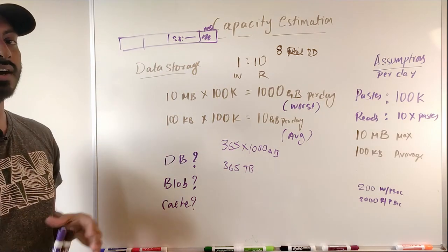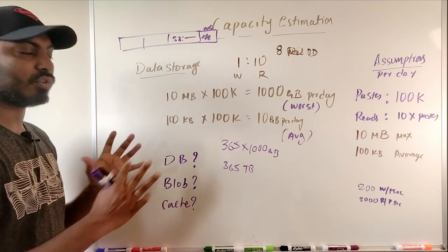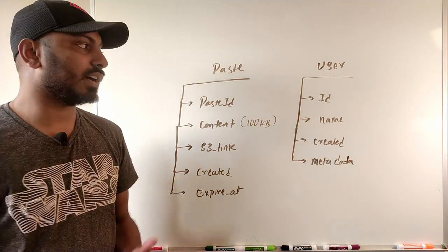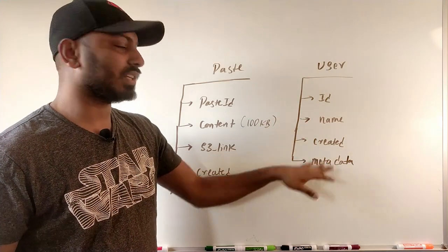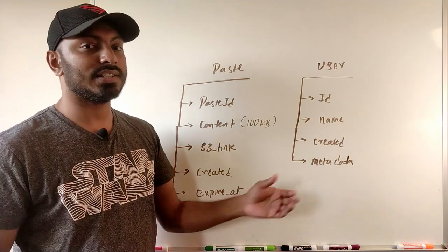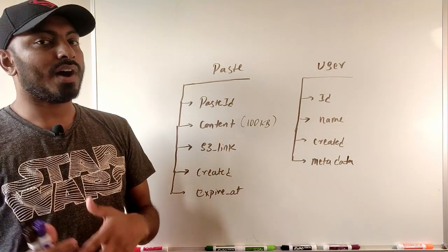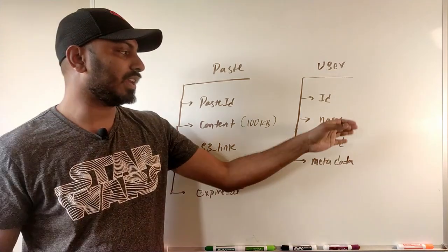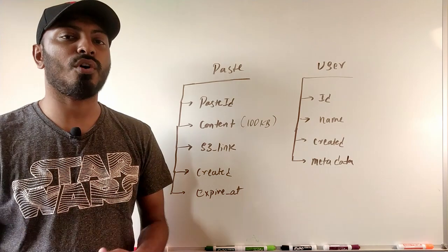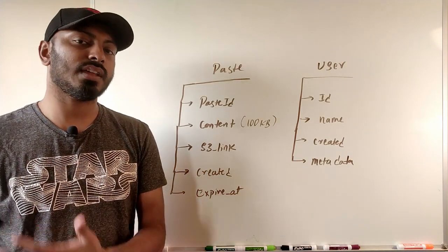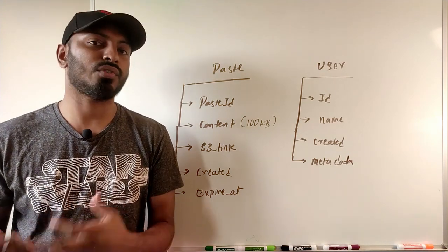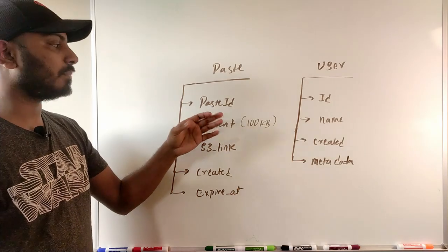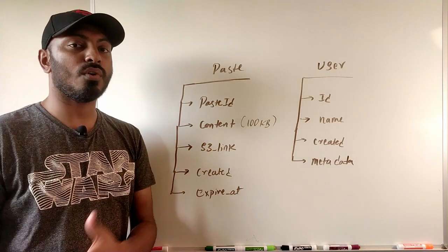We can efficiently use distributed blob storage like S3 for large blocks. For the database schema, we need two tables: a user table with fields like ID, name, created date, and metadata permissions; and a paste table. The user table handles both logged-in users and anonymous users — anonymous users won't have a name but will have an ID linked to their session.